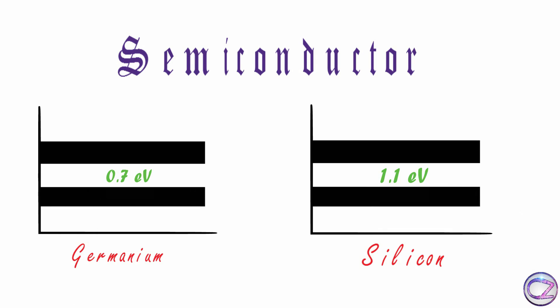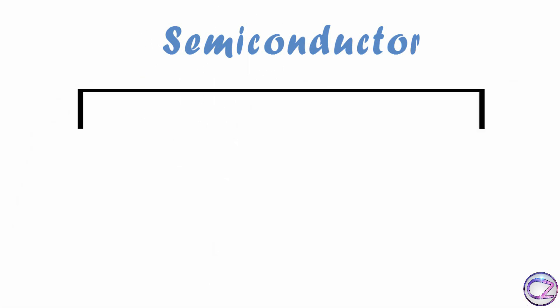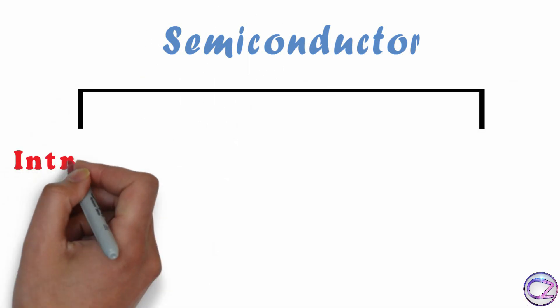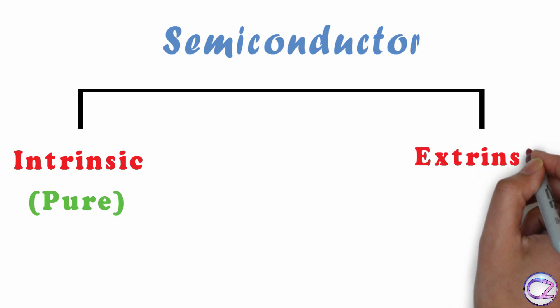But Germanium is more expensive than Silicon, that's why most electronic components are made by Silicon. Semiconductor classifications: there are two kinds of semiconductors, which are Intrinsic Semiconductor and Extrinsic Semiconductor.